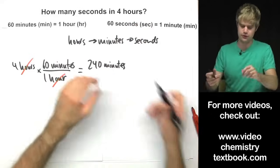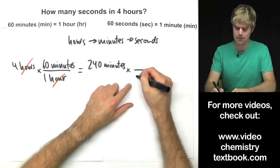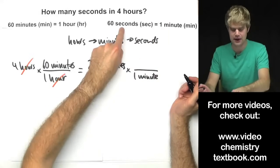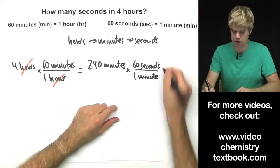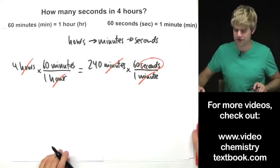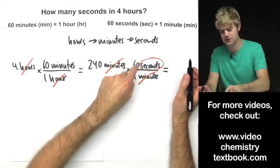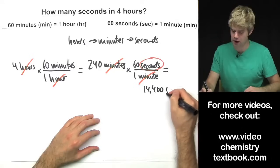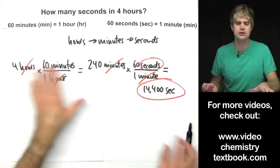Now my answer is in minutes but I still need to go from minutes to seconds, so I'll use a second conversion factor. I multiply 240 minutes by another factor — one minute on the bottom and sixty seconds on the top. Minutes cancels, and I'm finally left with seconds. The math is 240 times 60 divided by 1, which gives fourteen thousand four hundred seconds — the final answer for this two-step problem.